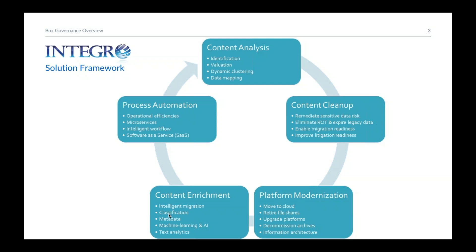Platform modernization — getting to the cloud, serverless products, or infrastructure as a service for your ECM systems — has huge benefits. Content enrichment uses machine learning and artificial intelligence to add metadata and additional information to your content so you can automatically govern it and take action on it. The last area is process automation — taking that content and automating it through the process. John, thanks for being a guest speaker — welcome and take it away.